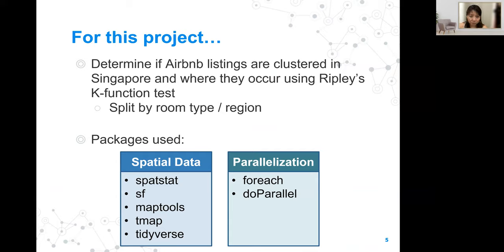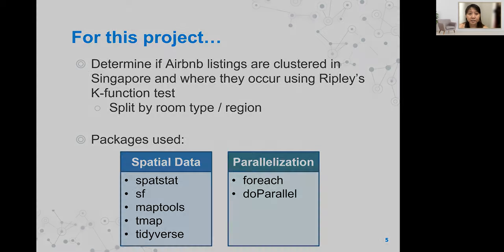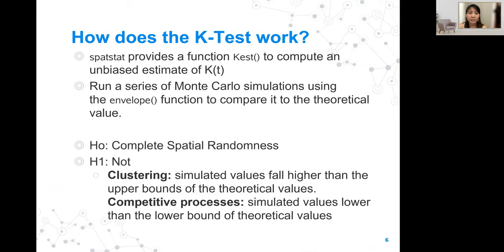Those are the packages we use, and I want to talk a bit more about how we parallelize the K test for larger datasets. SpatStat provides the function ks to compute an m-bias estimate of K(t), and then it runs a series of Monte Carlo simulations using the envelope function and compares it to the theoretical value.